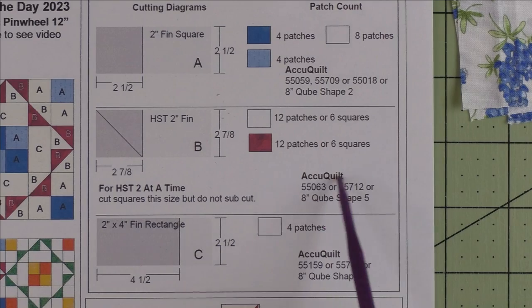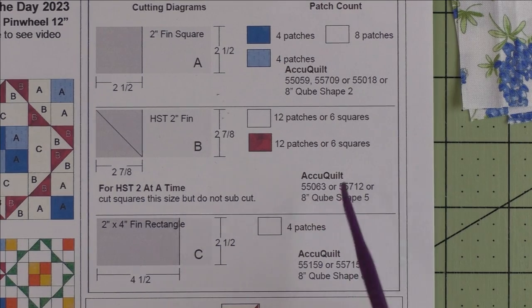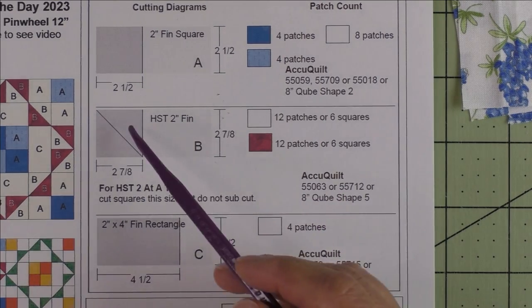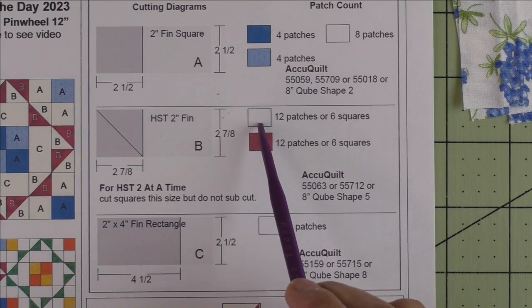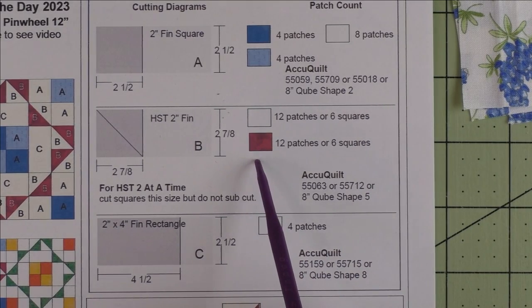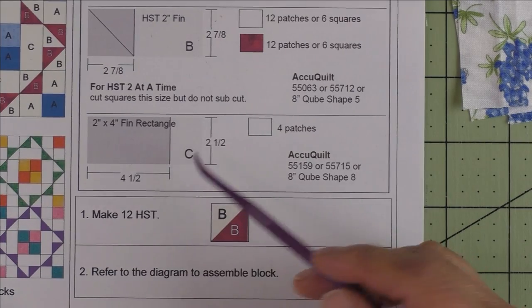If you're using AccuQuilt, these are the dies you can use to cut the half square triangle shapes. You will need 12 patches of the background and 12 patches of the red fabric.